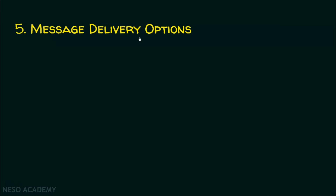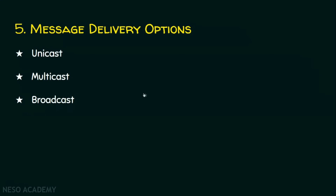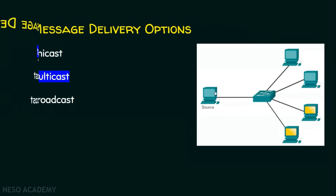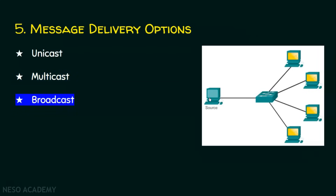The last element of the protocol is the message delivery options. There are three delivery options: one, unicast; two, multicast; three, broadcast. Unicasting means one sender and one receiver — the sender is going to send data to exactly one receiver in the network. If the sender sends data to a set of receivers but not to all, then this is multicasting. Broadcasting means the sender sends data to all the participants in the network.